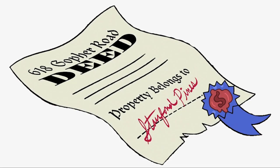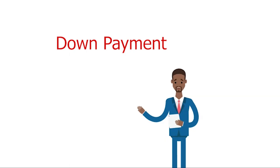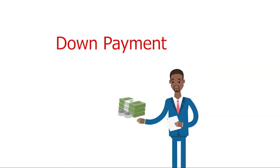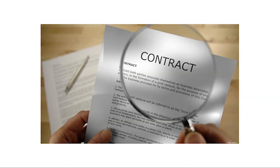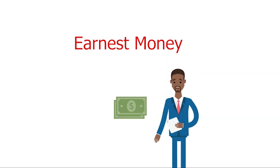Deed: a legal document used to transfer a property or rights to another person. Default: you have defaulted when you fail to make your mortgage payments on time or meet the terms of your loan. Down Payment: the amount of money you put down as your contribution, beside the loan, towards the purchase of your home — it may be as low as 3% or 3.5% for an FHA loan. Due-on-Sale Clause: a provision in a mortgage contract that allows the lender to demand repayment in full upon a sale or transfer of the property. Earnest Money: also termed a good faith deposit, this is the amount of cash you put down, usually in an escrow account, to show your seriousness in buying a property.